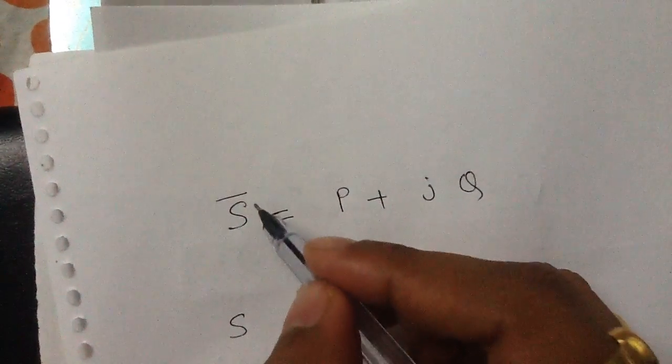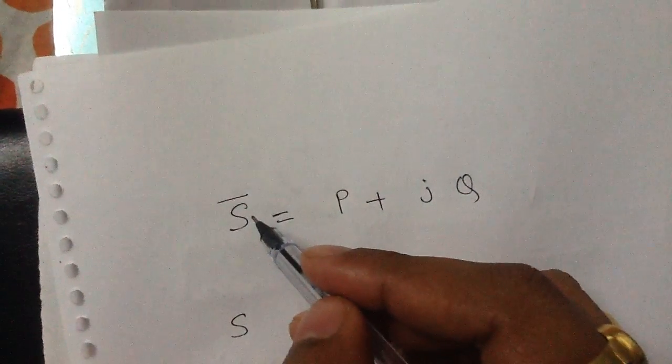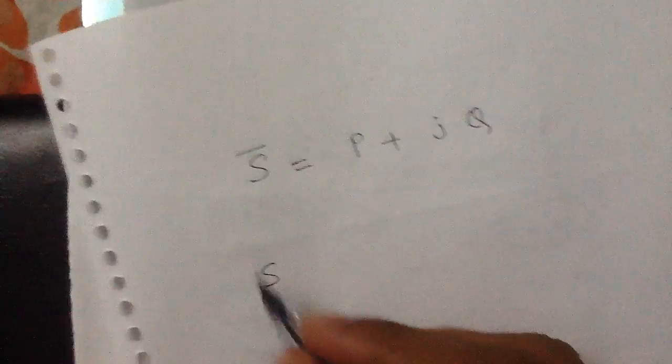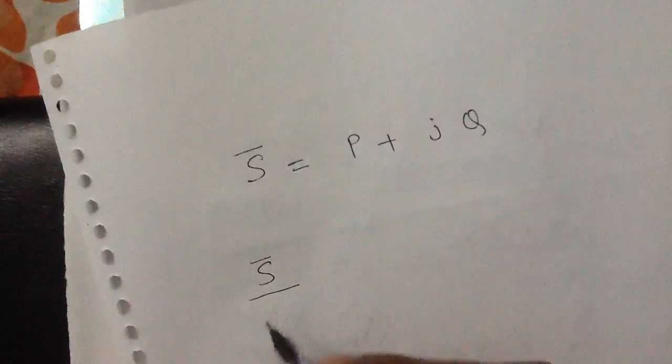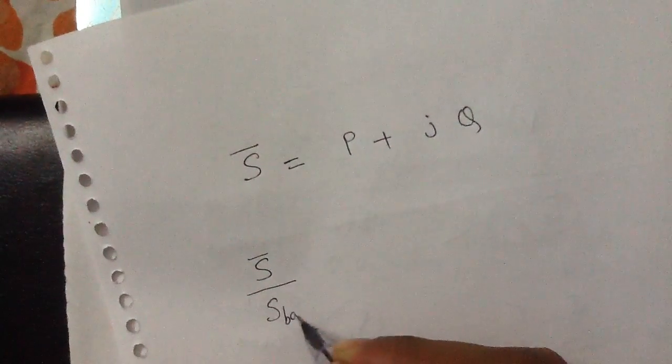Suppose I want to write the per unit value of the apparent power. So the per unit value of the apparent power can be written as S actual divided by S base.